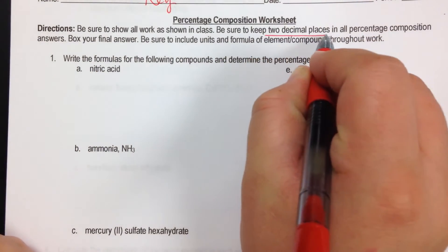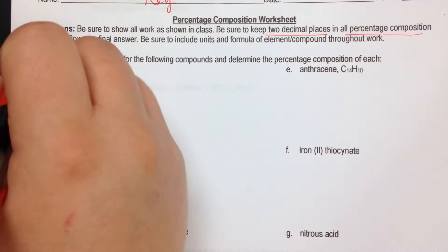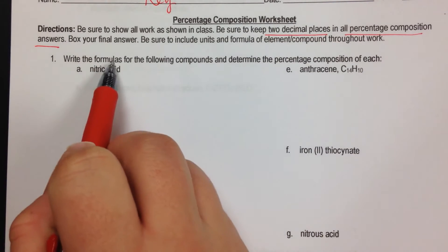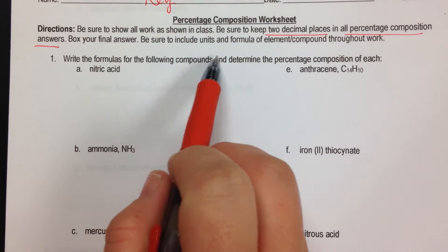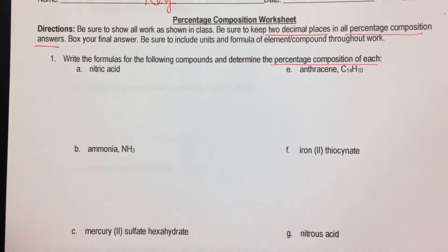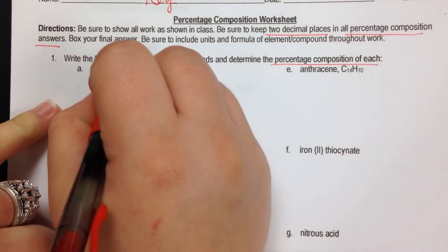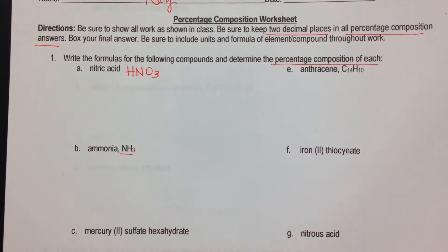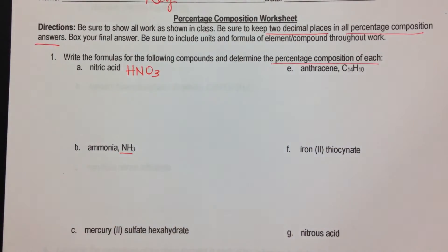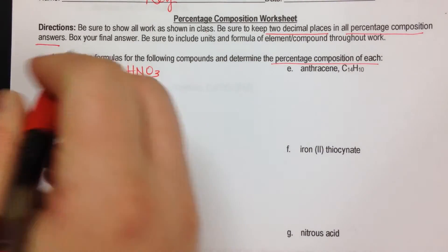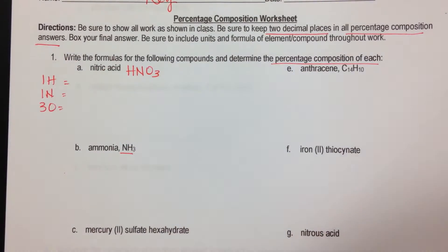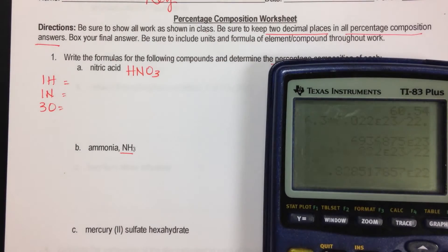You want to keep two decimal places in all percent composition answers, and your answers will be the percent of the elements. It says to write the formulas for the following compounds and determine the percent composition of each element. Nitric acid is HNO3. On this first one, I want to list my elements as if I were calculating molar mass, which I will be doing here.